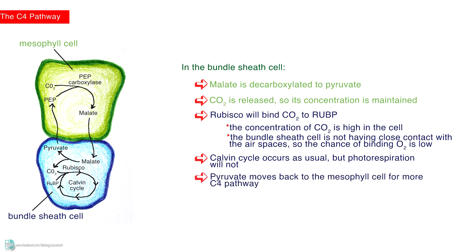Pyruvate moves back to the mesophyll cell for more C4 pathway, so more carbon dioxide can be released in the bundle sheath cell. If the concentration of carbon dioxide is maintained at all times, photorespiration is not possible.